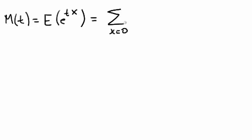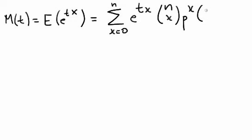which for the case of a binomial is the non-negative integers 0 to n, e to the tx times f of x, which for a binomial is n choose x, p to the x, 1 minus p to the n minus x.